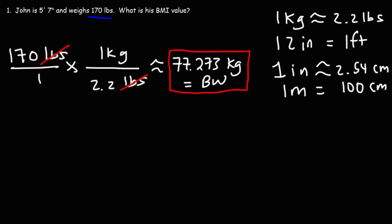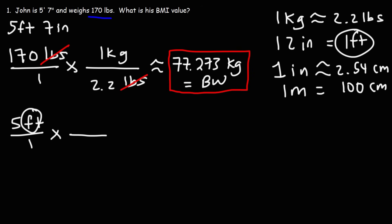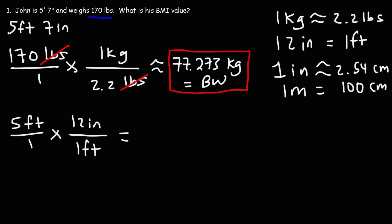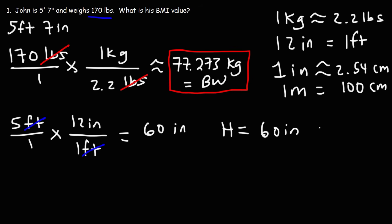Now let's focus on John's height. He's 5'7", meaning 5 feet and 7 inches tall. Let's convert the feet part to inches first, using our second conversion factor. Since we have feet on top, we put that part on the bottom of the second fraction. We can then cancel the unit feet. 5 times 12 is 60, so 5 feet equals 60 inches. Adding the 7 inches, John is 67 inches tall.